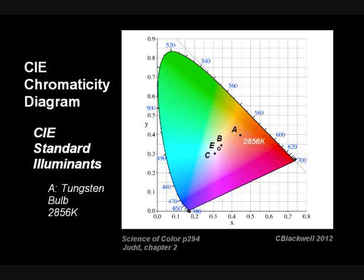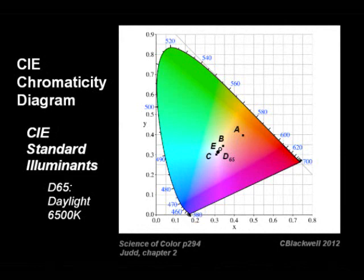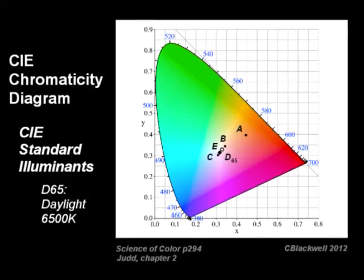Point A is the color of a tungsten light. Note it is in the region of yellow-orange. Point B is the color value for direct sunlight. Point C was intended to represent average daylight, but it was later superseded by a D series. The most commonly used is D65, which does a better job of representing average daylight, equivalent to 6,500 degrees Kelvin. To be complete, equal energy white is at about 5,500 degrees.